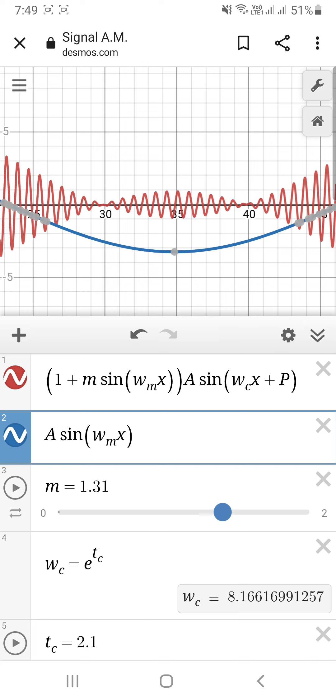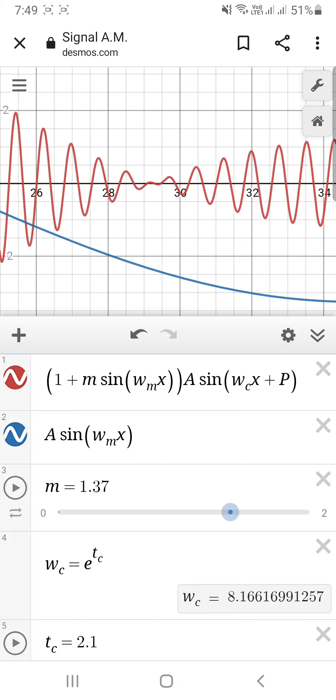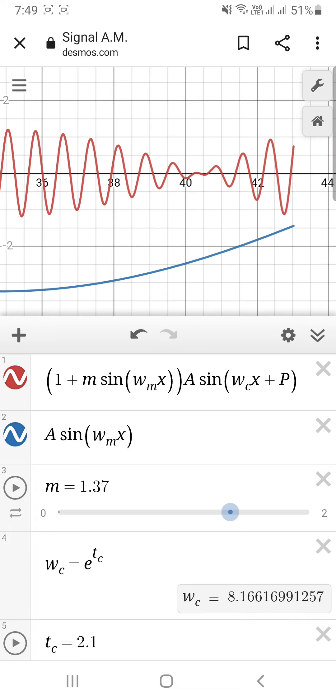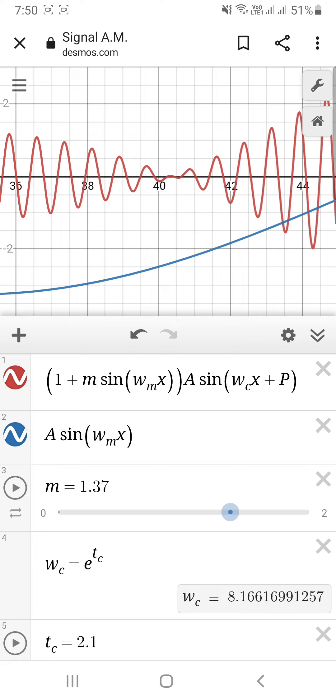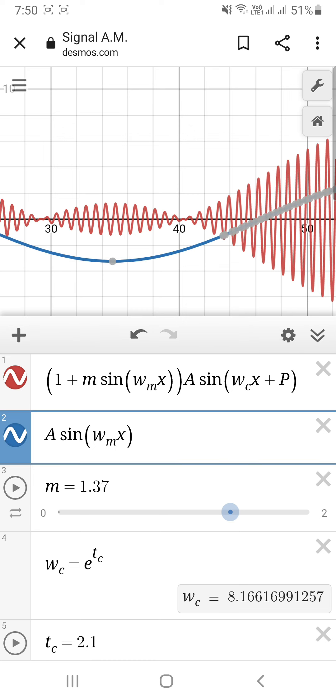So its magnitude becomes larger once again, and that's not something good because once again the receiver is an idiot. It will think that these points, these points where the magnitude of the amplitude is small, maybe those are the minima of our blue curve, but that's not the case clearly. So you should keep m less than one.